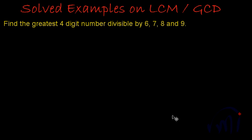Hi, so today we are going to solve a problem based on the results which we have discussed in earlier videos. The problem statement says: find the greatest four-digit number divisible by 6, 7, 8 and 9. So can we find the smallest possible number which is divisible by 6, 7, 8 and 9?